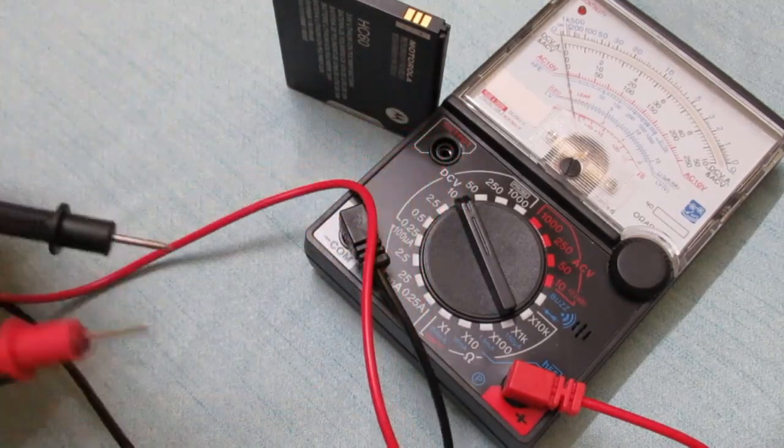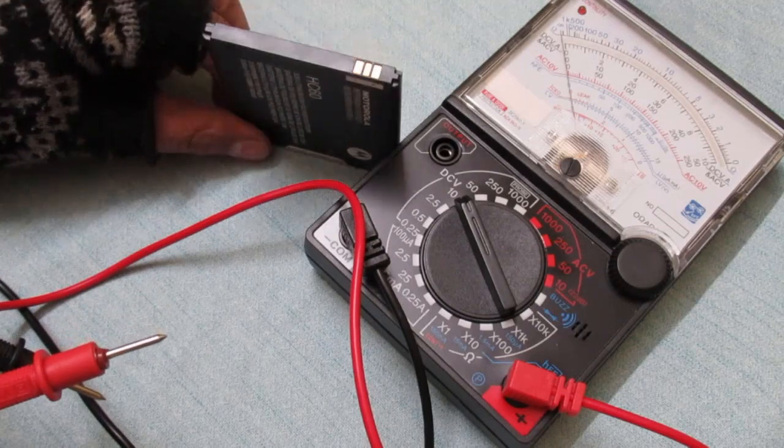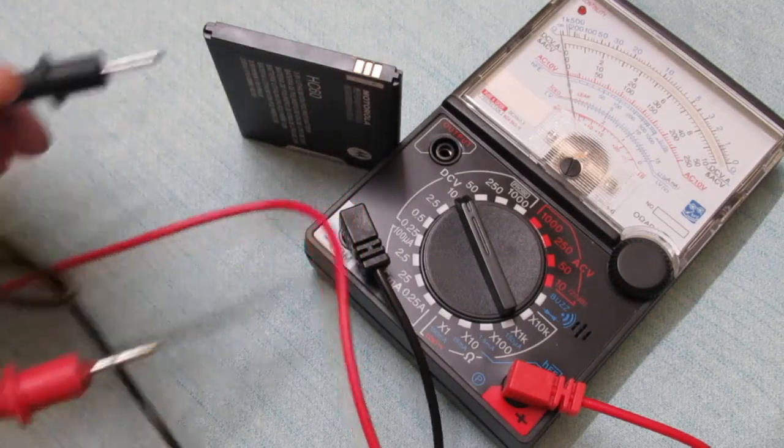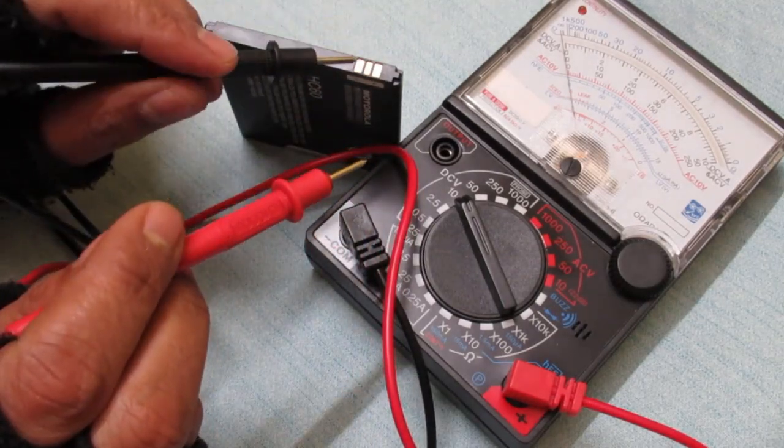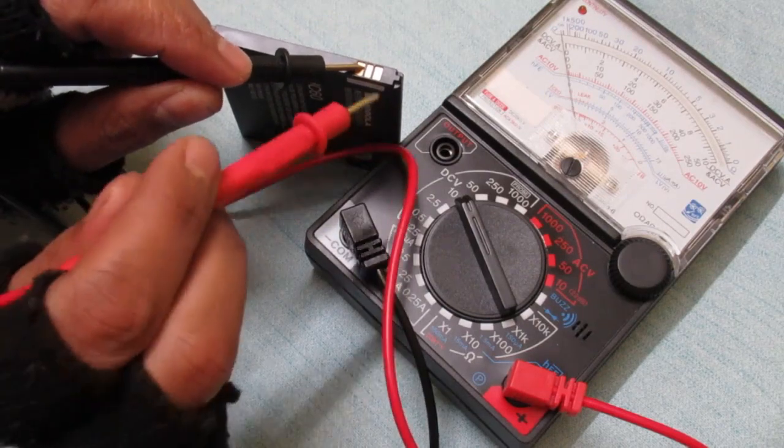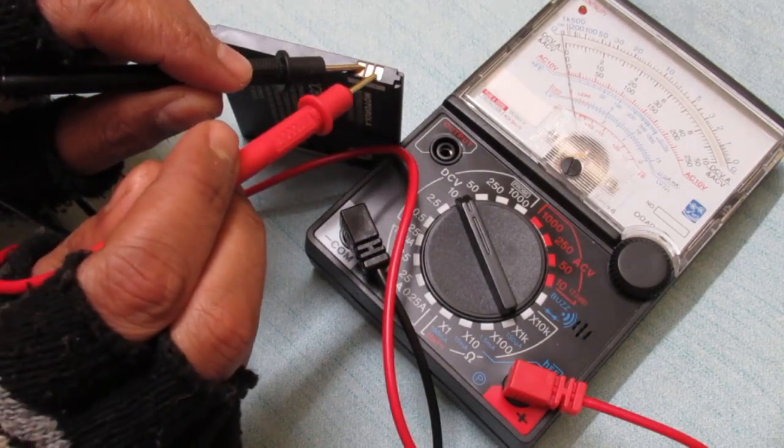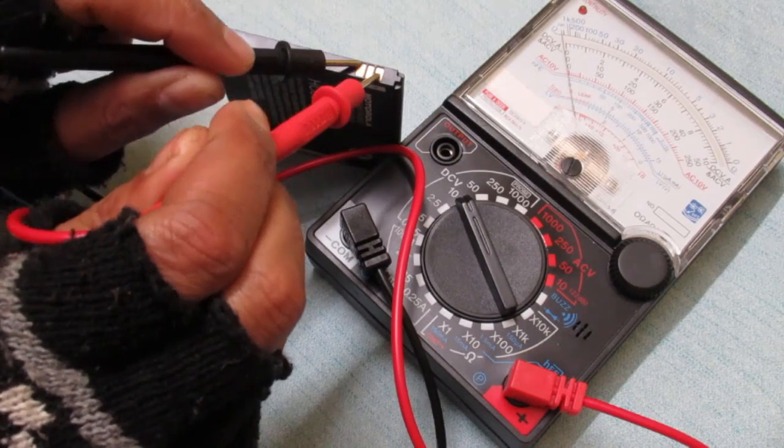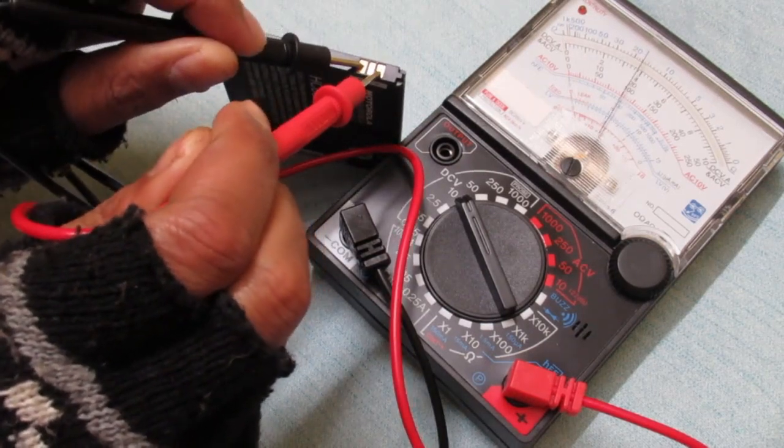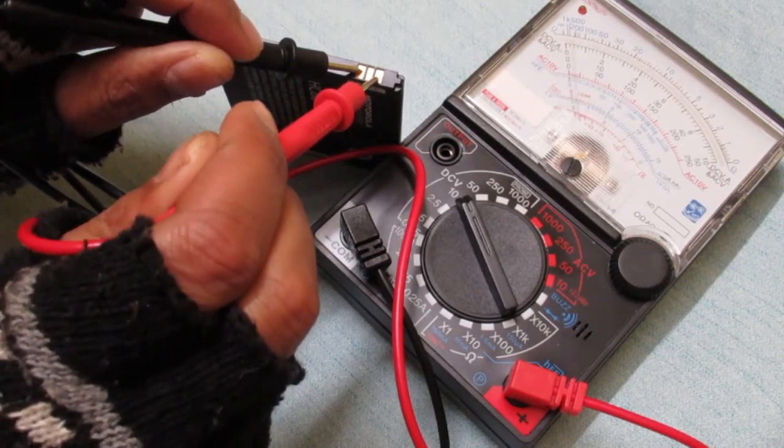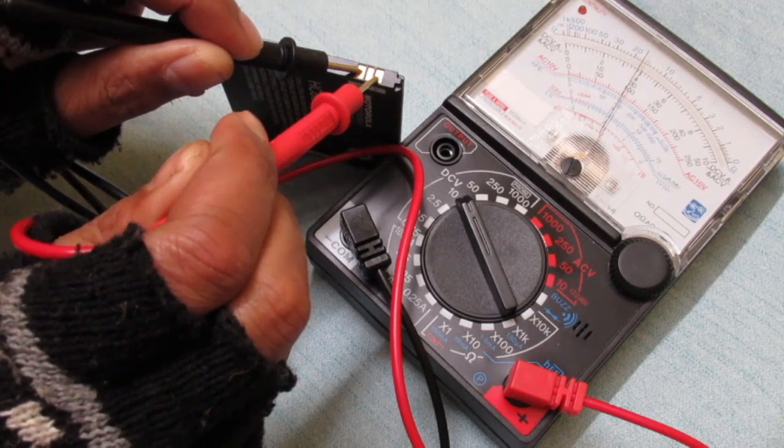Touch the red probe to the positive terminal of the battery and the black probe to the negative terminal. This battery is showing approximately 3.8 volts DC.